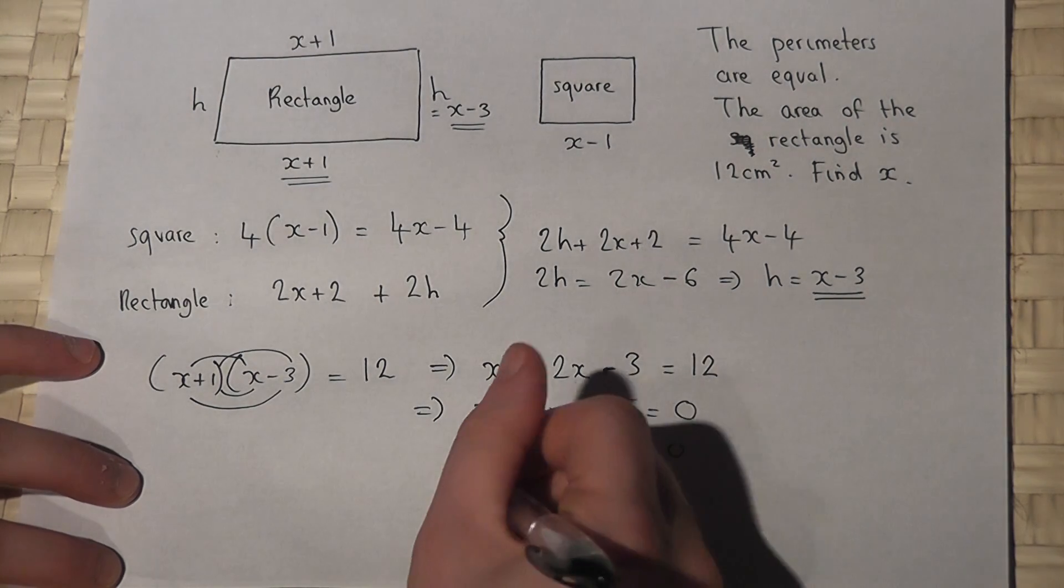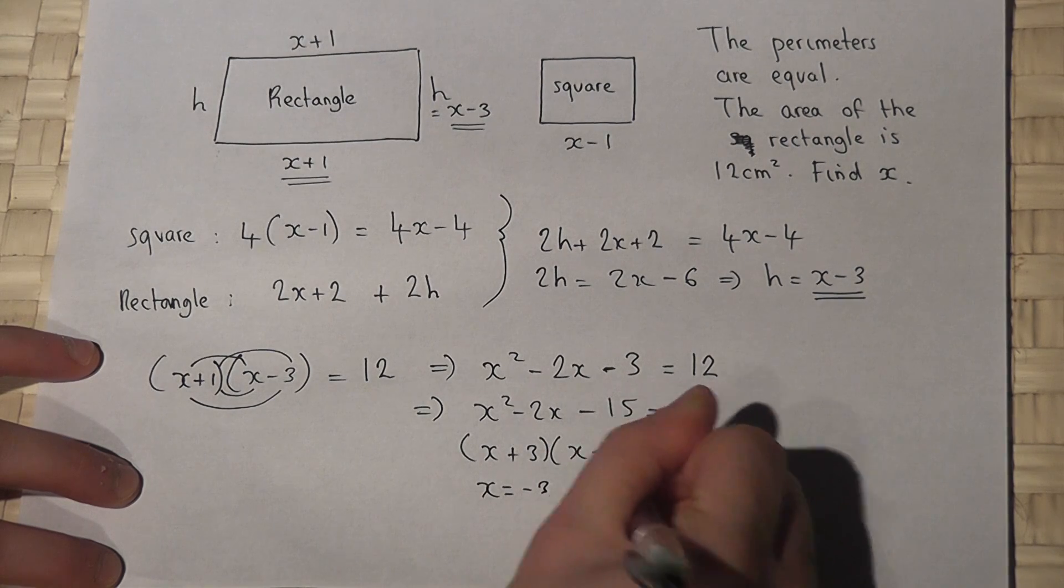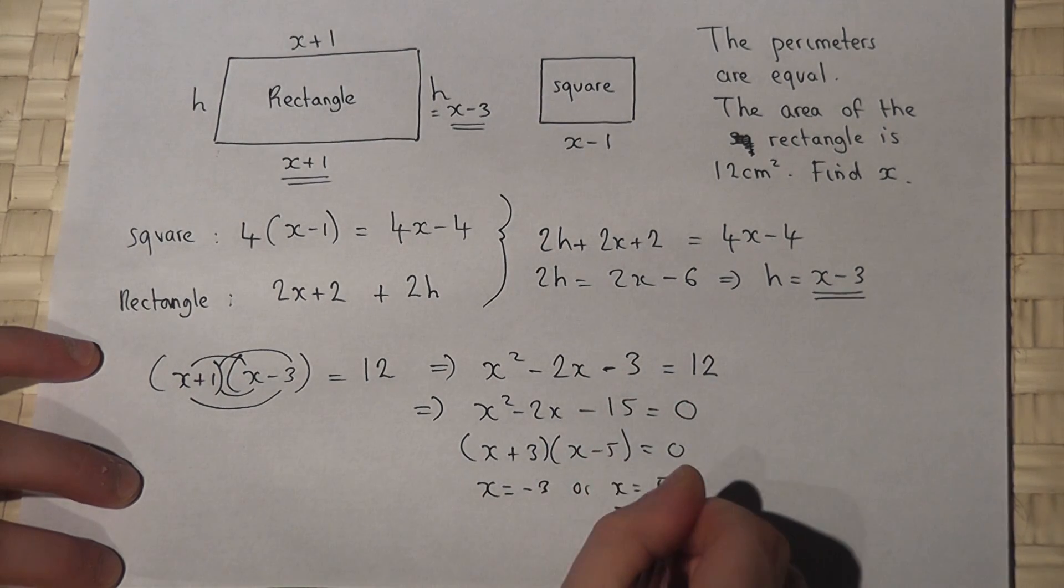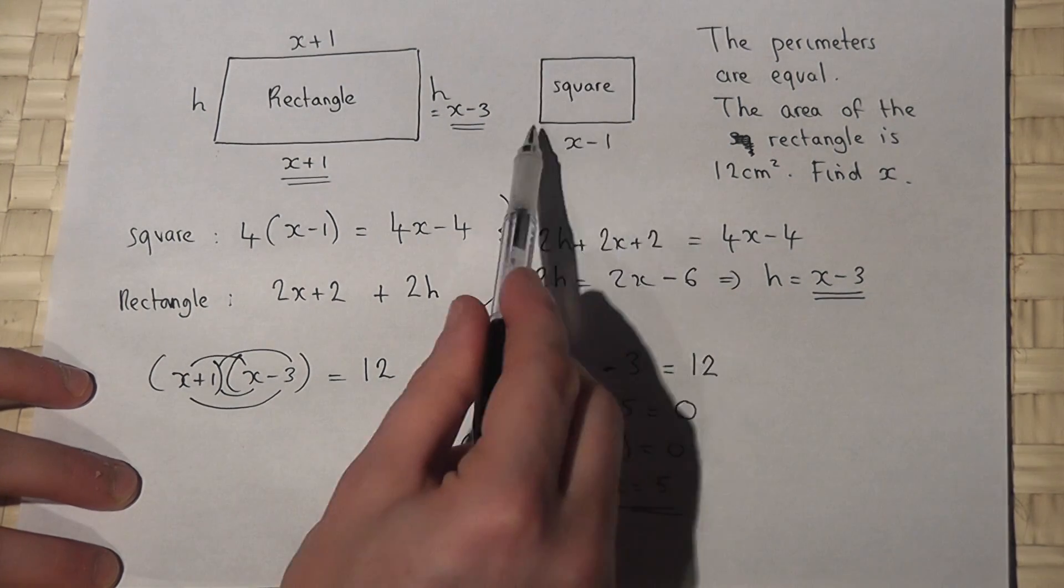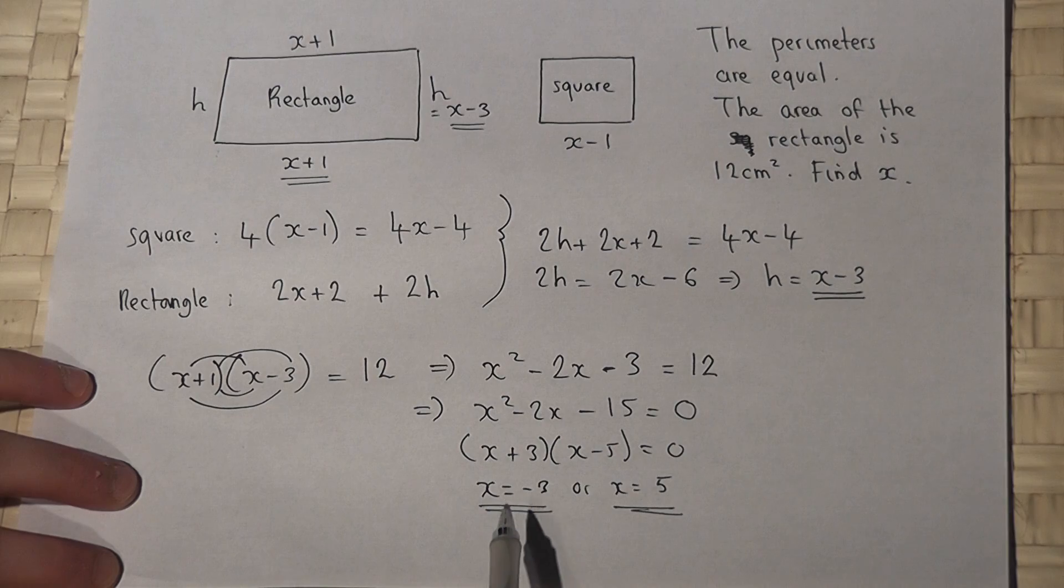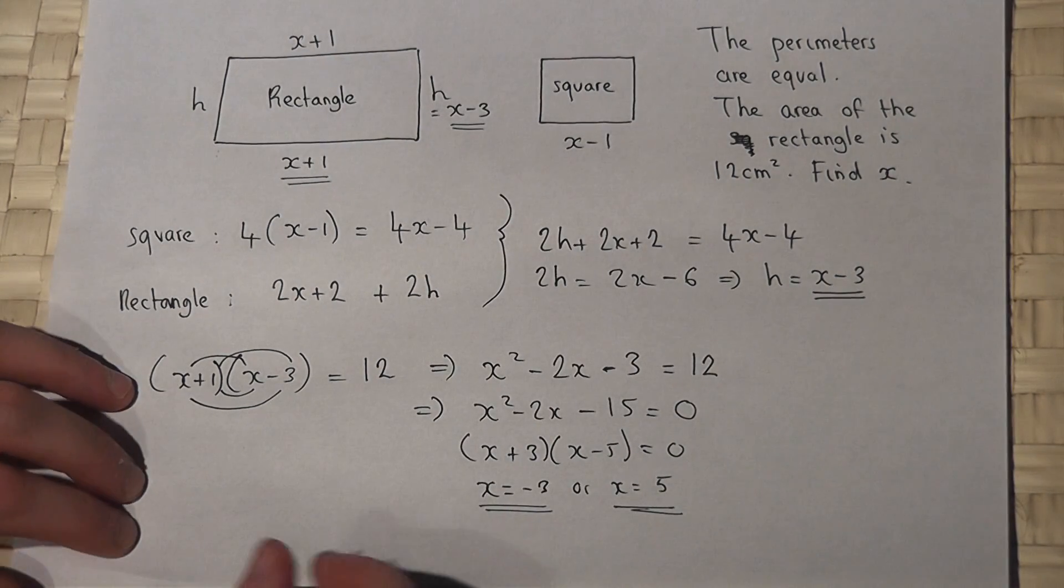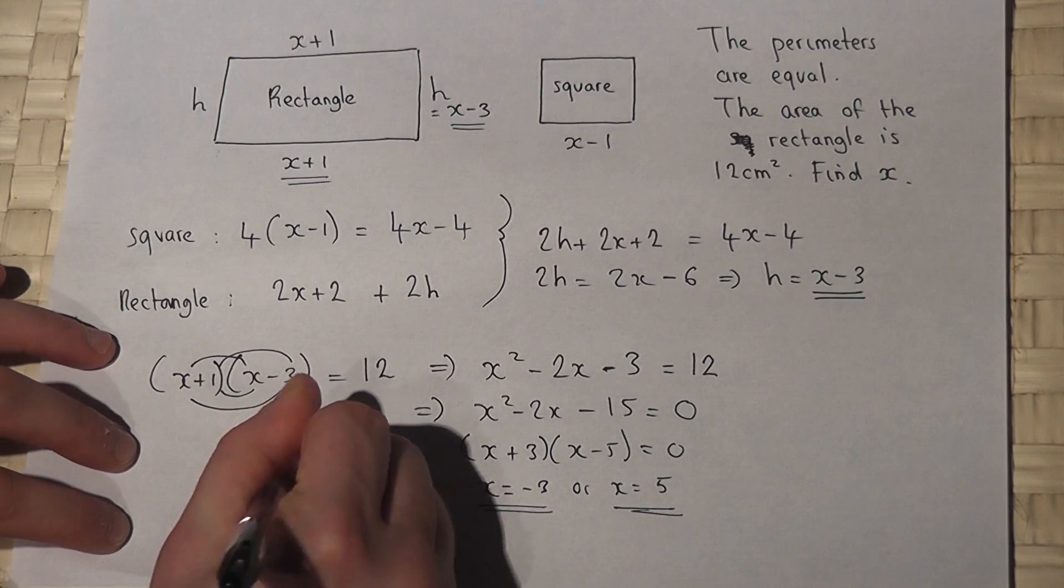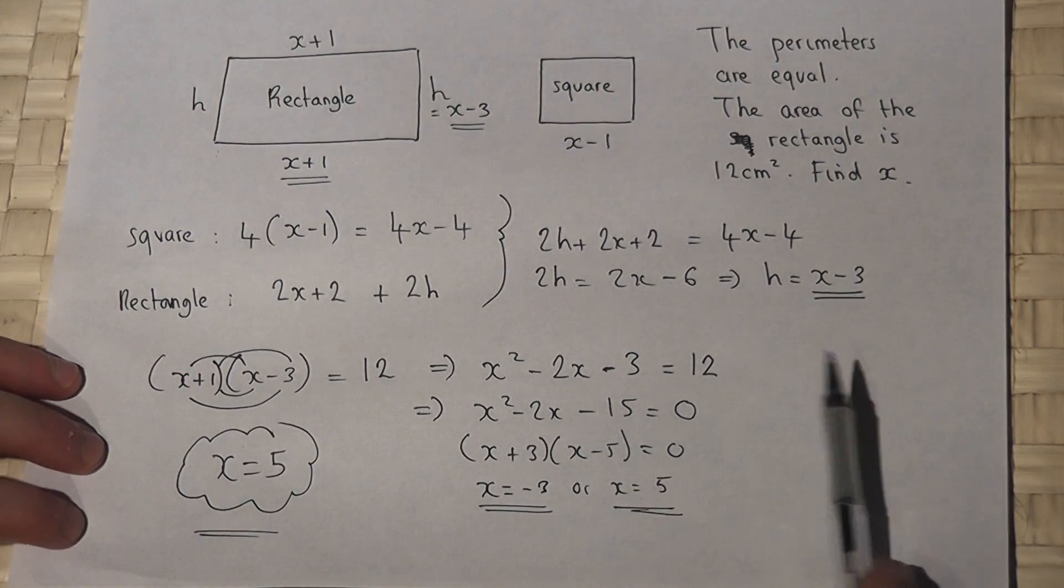Now because these are sides of objects, x equals minus 3 would be a negative side length. We can't have that. So the solution must be x equals plus 5. So there we go, we've found x for this problem.